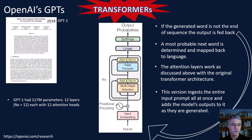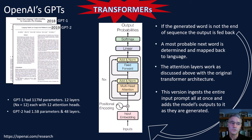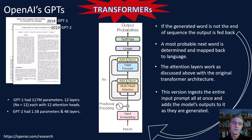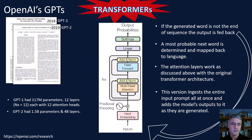They immediately realized bigger is going to be better, so they scaled up again with a bigger dataset — GPT-2. GPT-2 had 1.5 billion parameters and 48 layers. To ensure quality, they scraped the internet for text to train on — basically a large chunk of the public web. They did pre-training, then fine tuning, and tested it for reading comprehension, answering questions, summarizing, and language translation. Notably, they had never trained it specifically to translate language, yet it was able to translate.